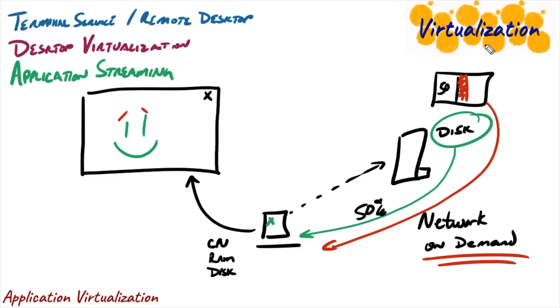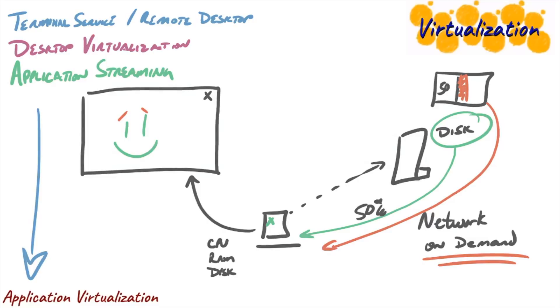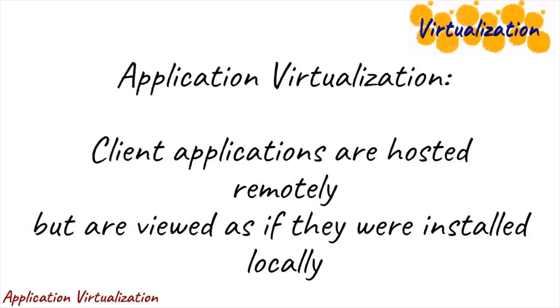So as we look at a terminal service or desktop virtualization or application streaming method of application virtualization, what's the common denominator? Or to put it another way, if we're in an interview getting asked, so how would you describe application virtualization? What's our answer going to be? Well, here's our quick and dirty definition, my friend. Application virtualization is when client applications are hosted remotely, but are viewed as if they were installed locally. And because of that, applications are centrally stored and can be centrally managed instead of trying to track down every application installed on every single desktop that you've ever created.